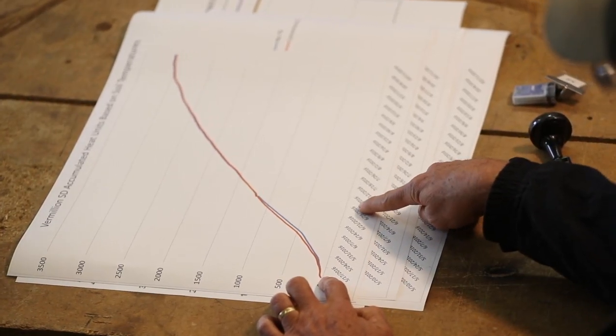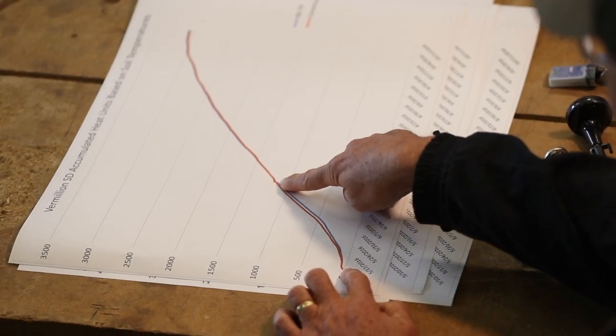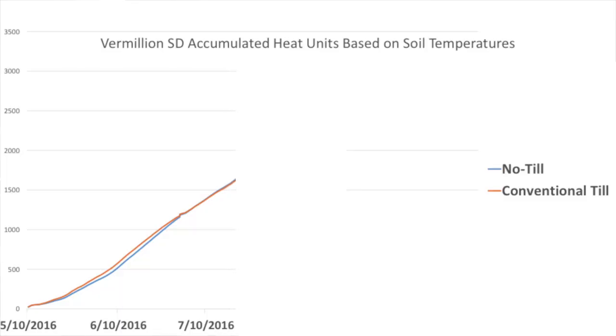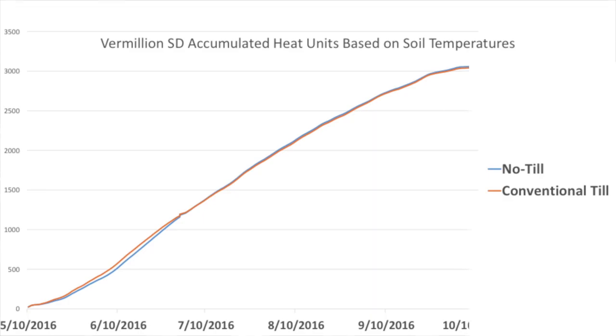Somewhere around about the end of June that kind of catches up, right? Yeah, that's where that temperature moderation is coming in with the no-till and helping it to catch up. An old professor of mine, Dr. Tom, which you interviewed, he always mentioned that the no-till will catch up later in that season — and it does happen.